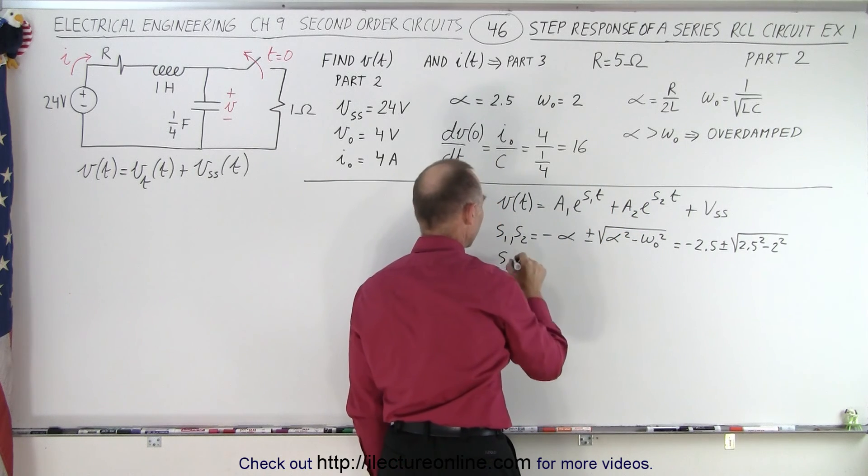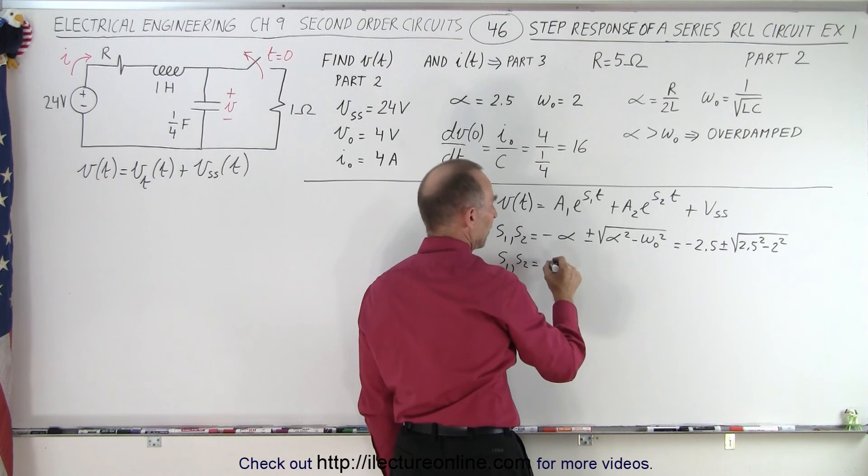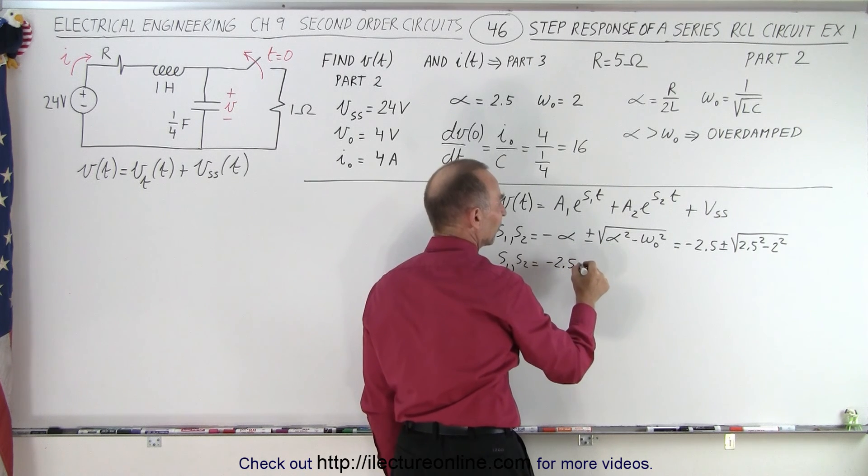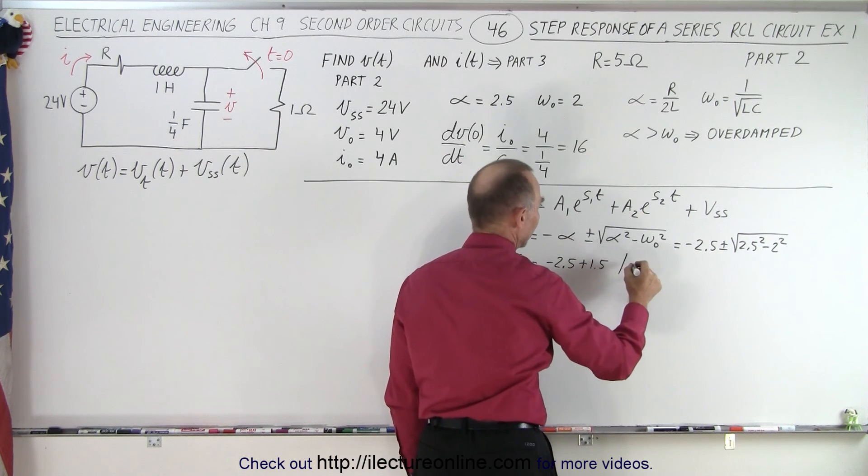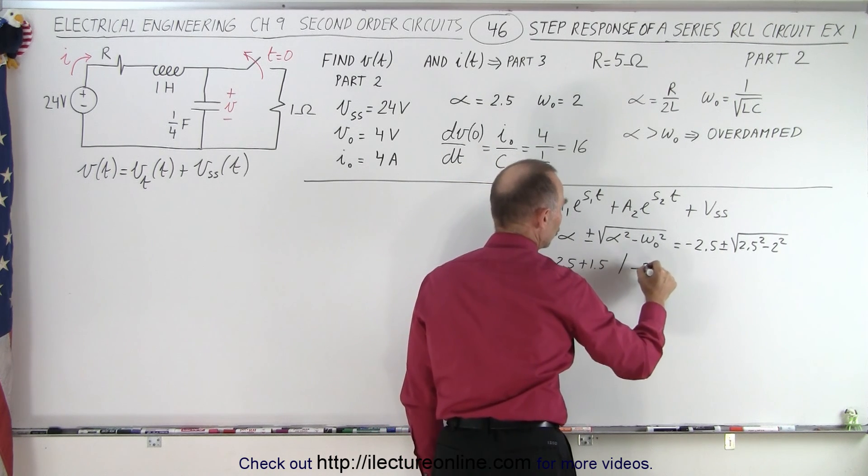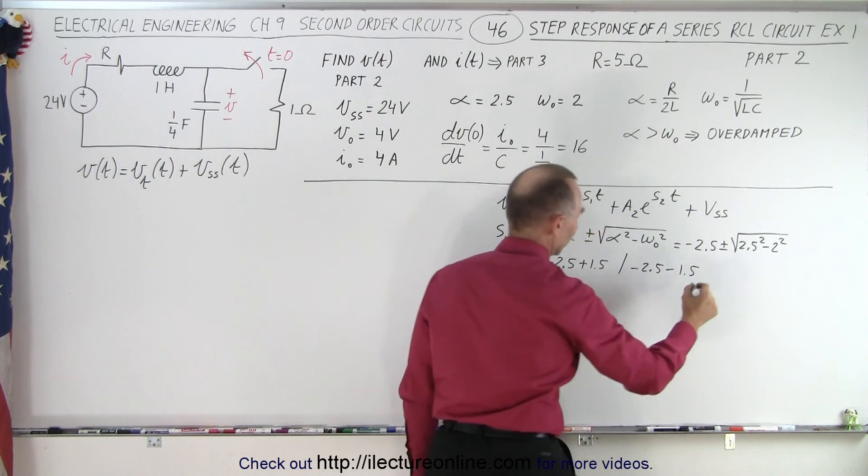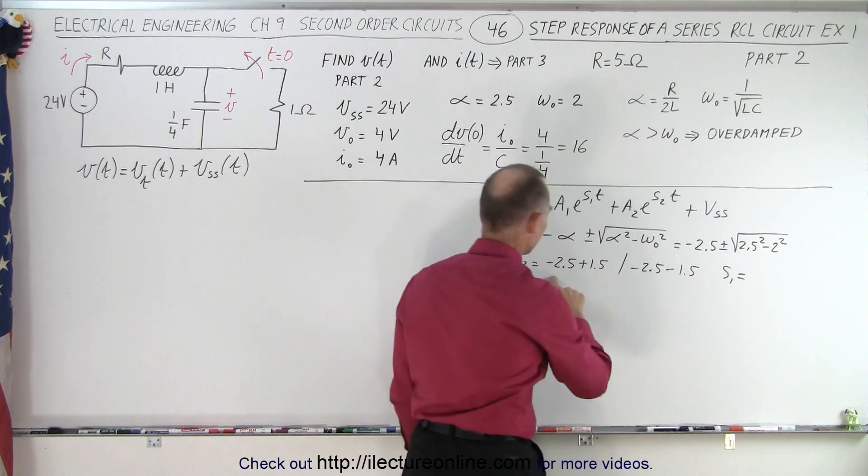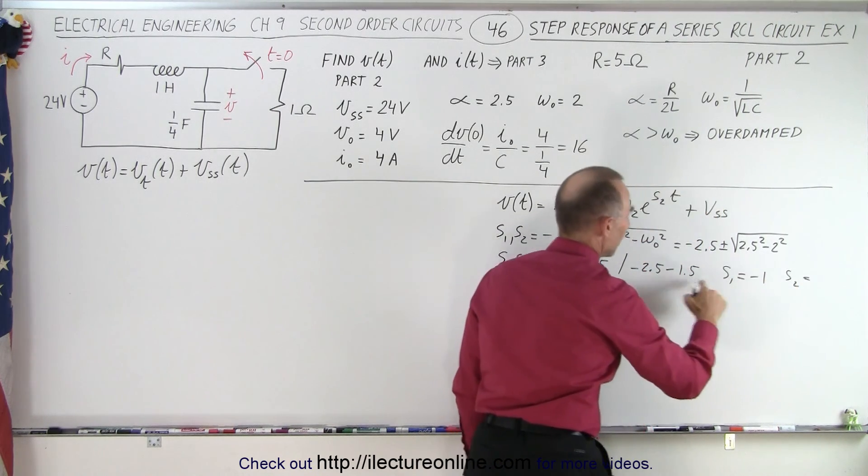Now 2.5 squared is 6.25 minus 4 is 2.25. The square root is 1.5, so we can say that S1, S2 is equal to minus 2.5 plus 1.5, and it is minus 2.5 minus 1.5. So in other words, we can say that S1 equals minus 1, and S2 equals minus 4.